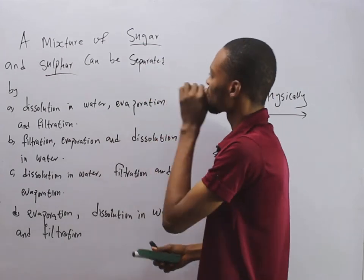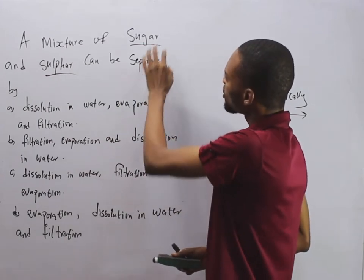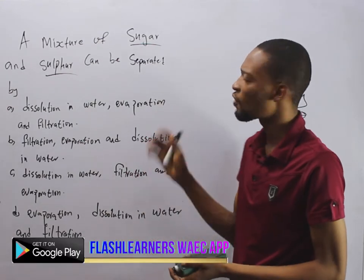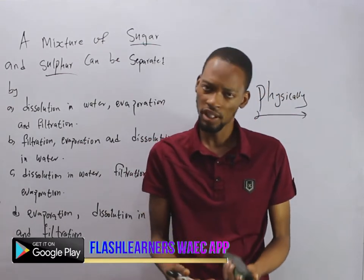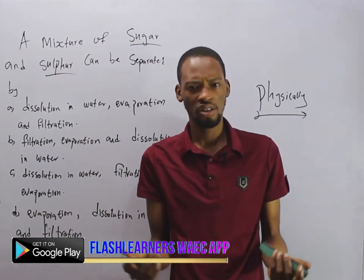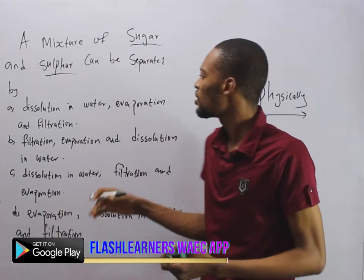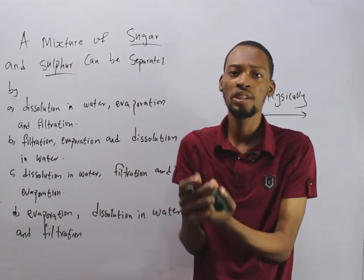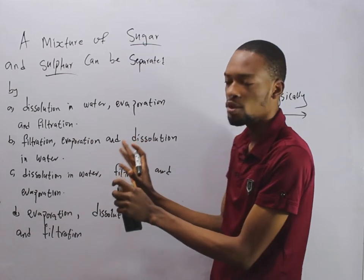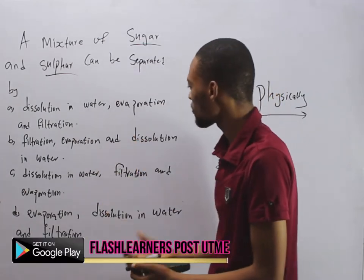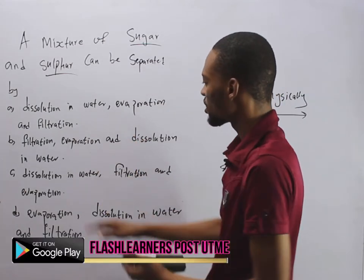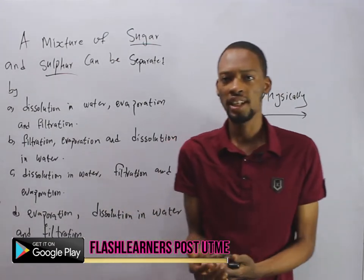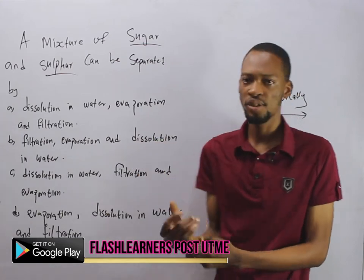Looking at this: sugar dissolves in water readily, while sulfur is insoluble in water. So what do we do? We dissolve the mixture in water — that is dissolution. Sugar will dissolve in water, leaving behind the sulfur.